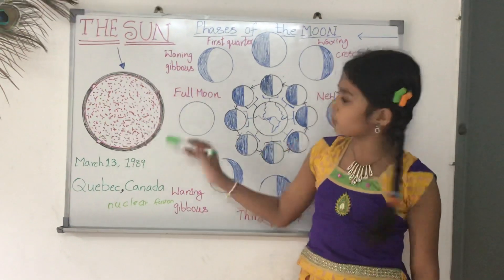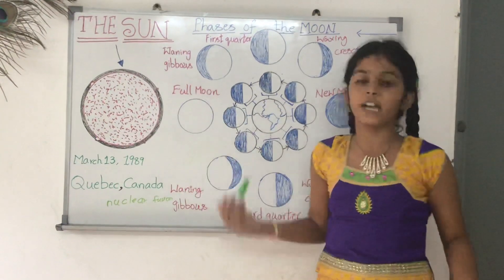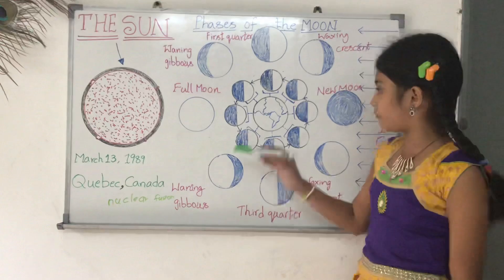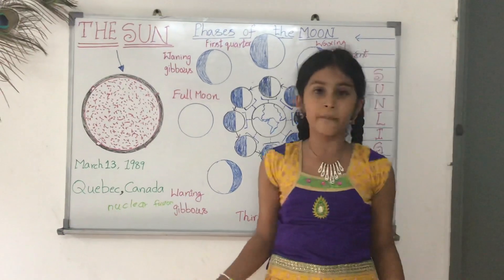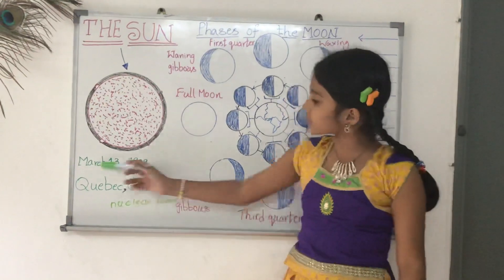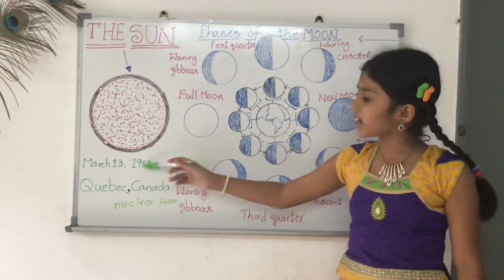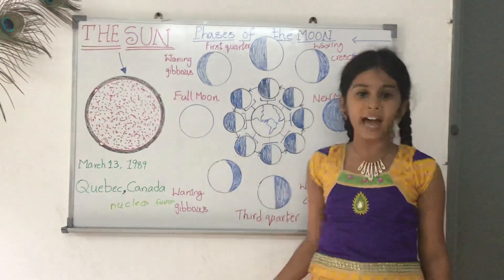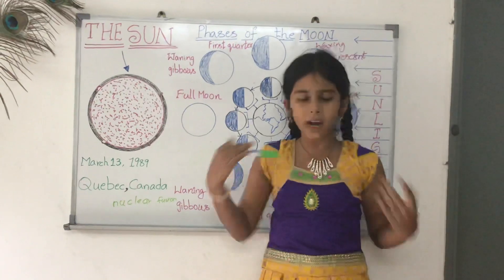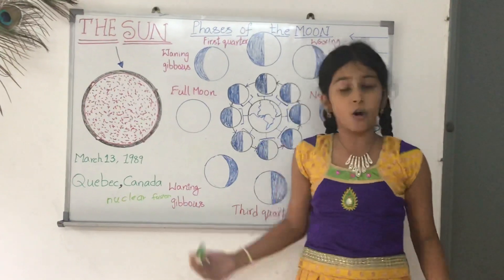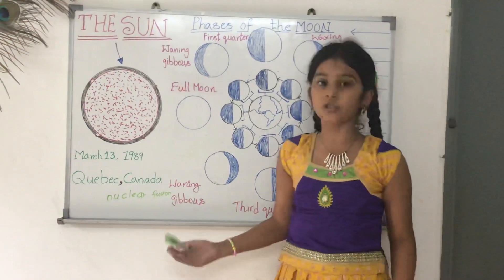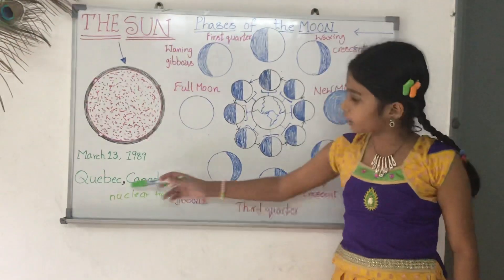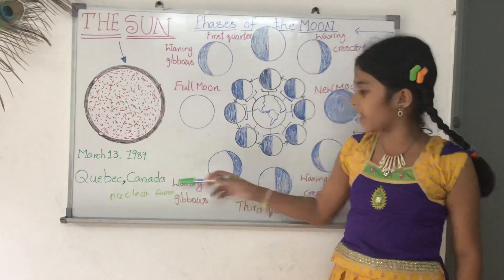The storms on the sun can also affect the earth. For example, on March 13th, 1989, a solar storm caused a power blackout in Quebec, Canada.